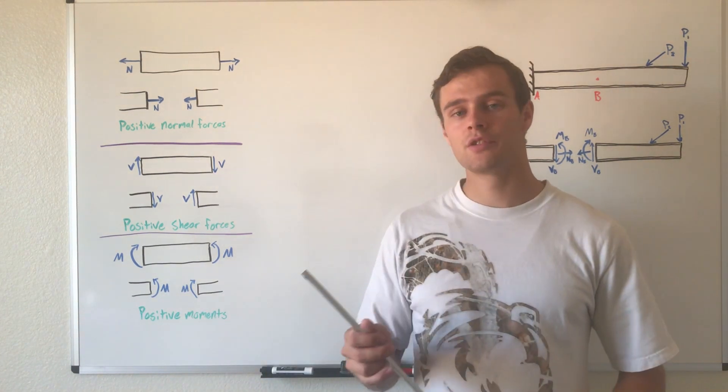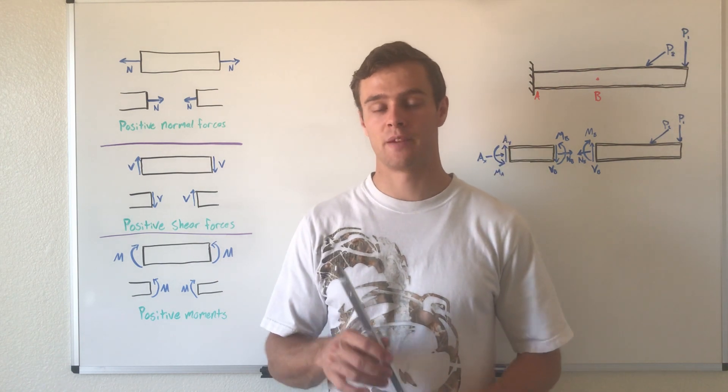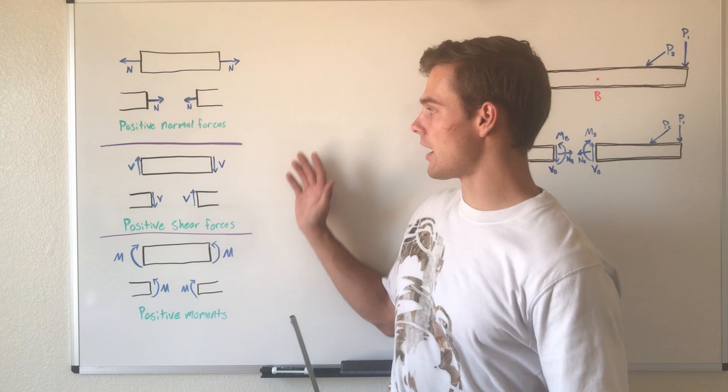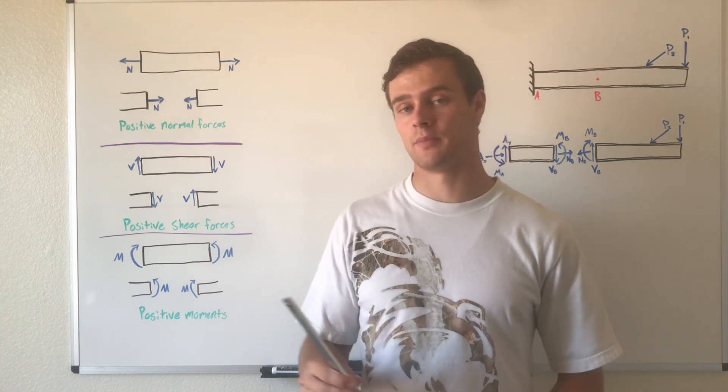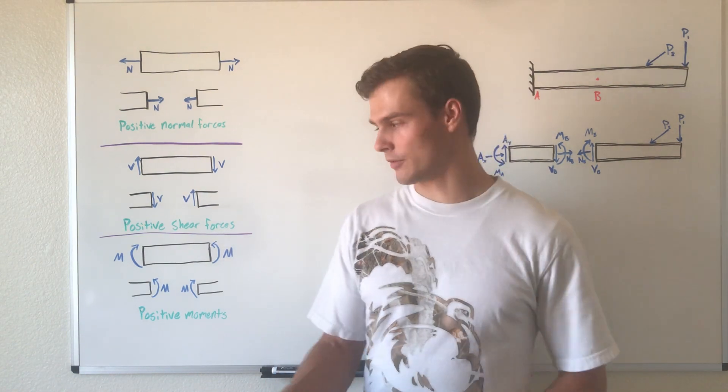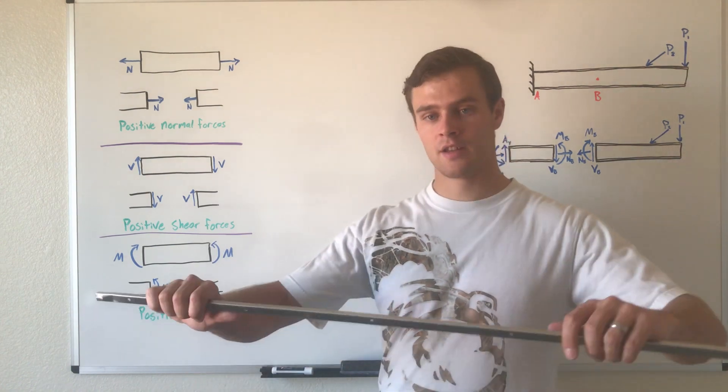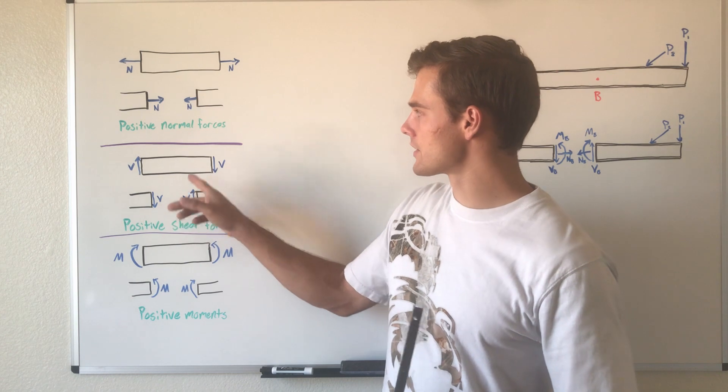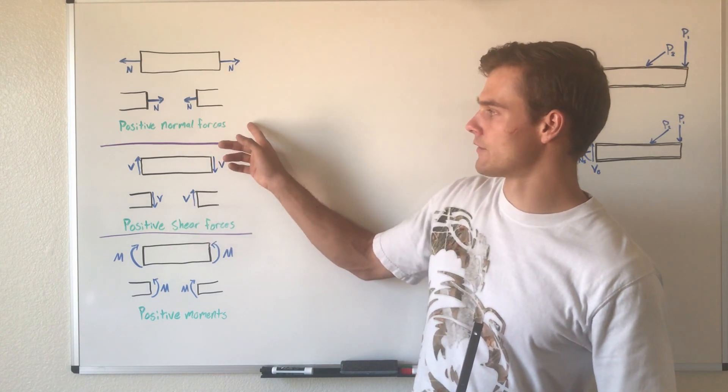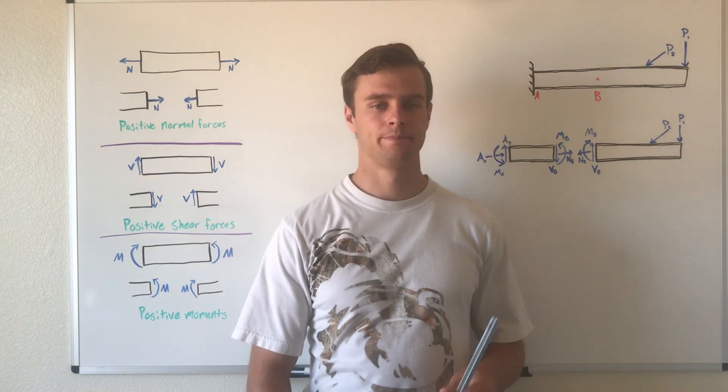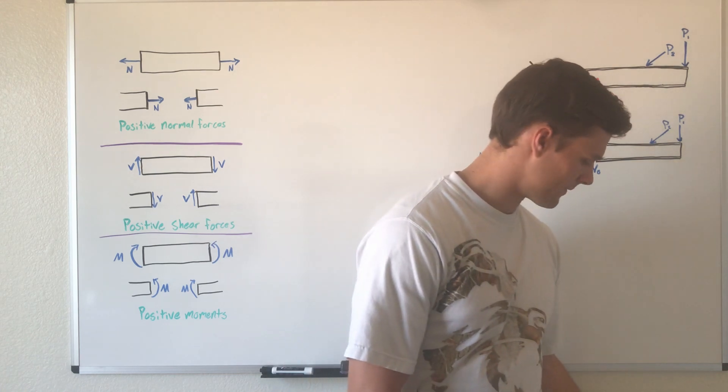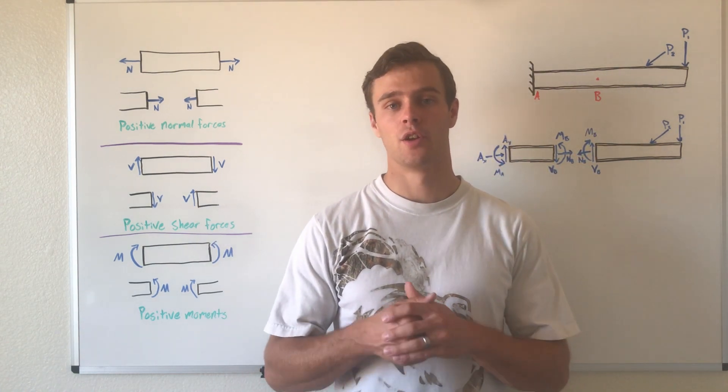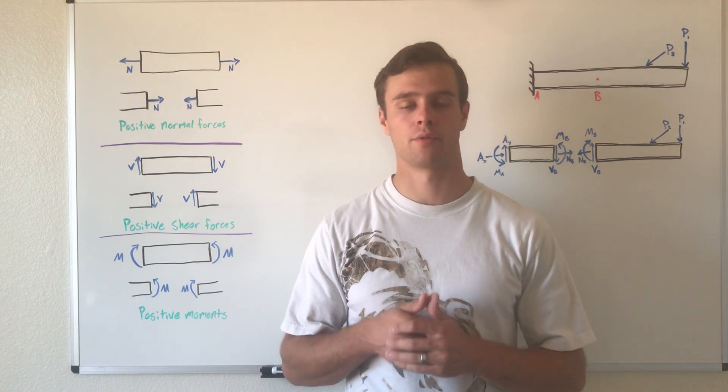We usually use these sign conventions to keep track of what's positive and negative. Obviously, the opposite directions would be negative. So concave down, like a frowny face, would be causing counterclockwise rotation, and a negative normal force would be in compression. These conventions aren't necessary, but they help you and others know what you're talking about when you say positive or negative.